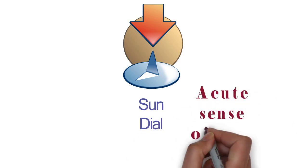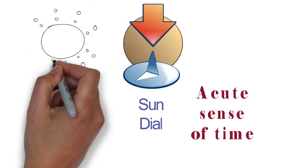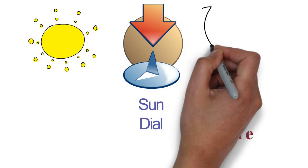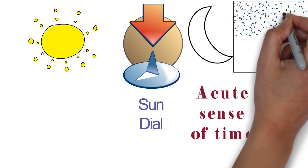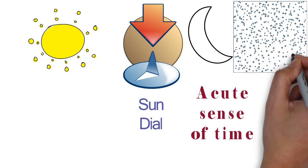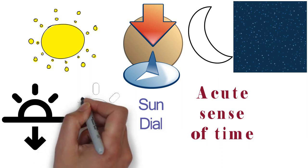They had a very acute sense of time. They had divided the days and nights into sections and knew how to read time through stars, sunsets, sunrises, and so many other things.